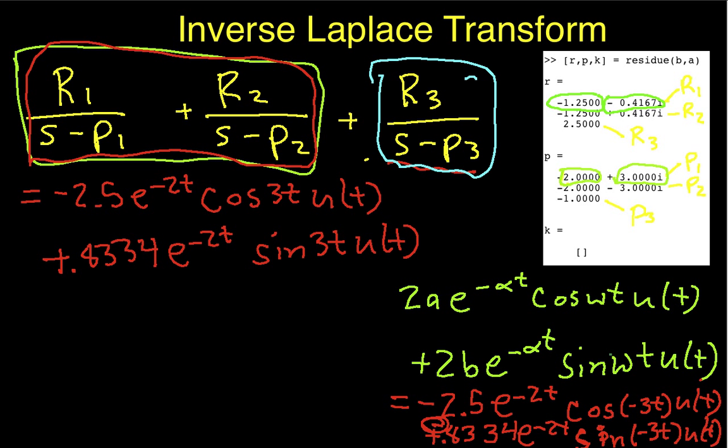R3 is 2.5, P3 is minus 1. So, this becomes 2.5 over s plus 1. The inverse transform of that guy is 2.5 e to the minus 1t u of t.